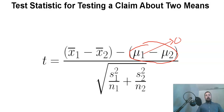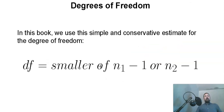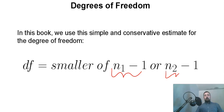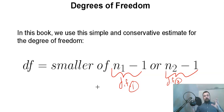Because we're using the T-distribution, we need a degree of freedom. We'll keep it simple: the degree of freedom is the smaller of N1 minus one or N2 minus one. So we take the individual degrees of freedom for each sample and use the smaller of the two as the degree of freedom for the entire hypothesis test.